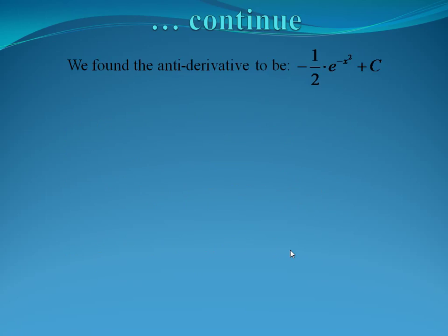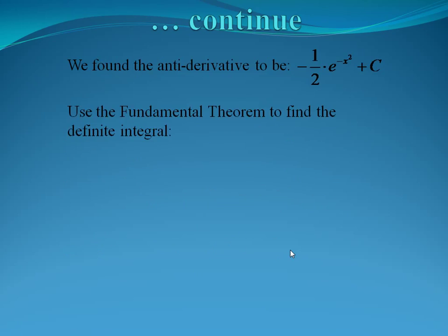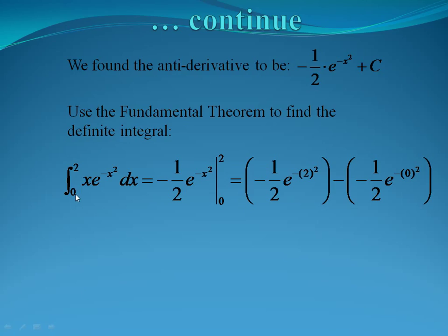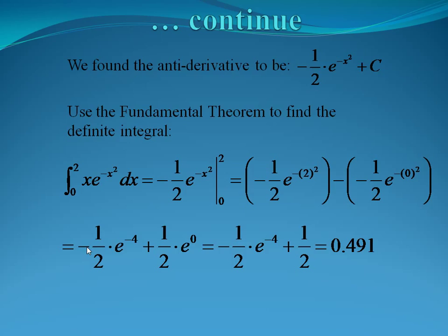Now that we have our general antiderivative, we incorporate our bounds using the fundamental theorem. The integral from 0 to 2 of xe to the negative x squared equals negative one half e to the negative x squared evaluated from 0 to 2 — we don't need the c anymore. Plugging in the upper bound first: negative one half e to the negative 2 squared, minus negative one half e to the negative 0 squared. Simplifying: negative one half e to the negative 4, plus one half e to the 0, giving approximately 0.491.